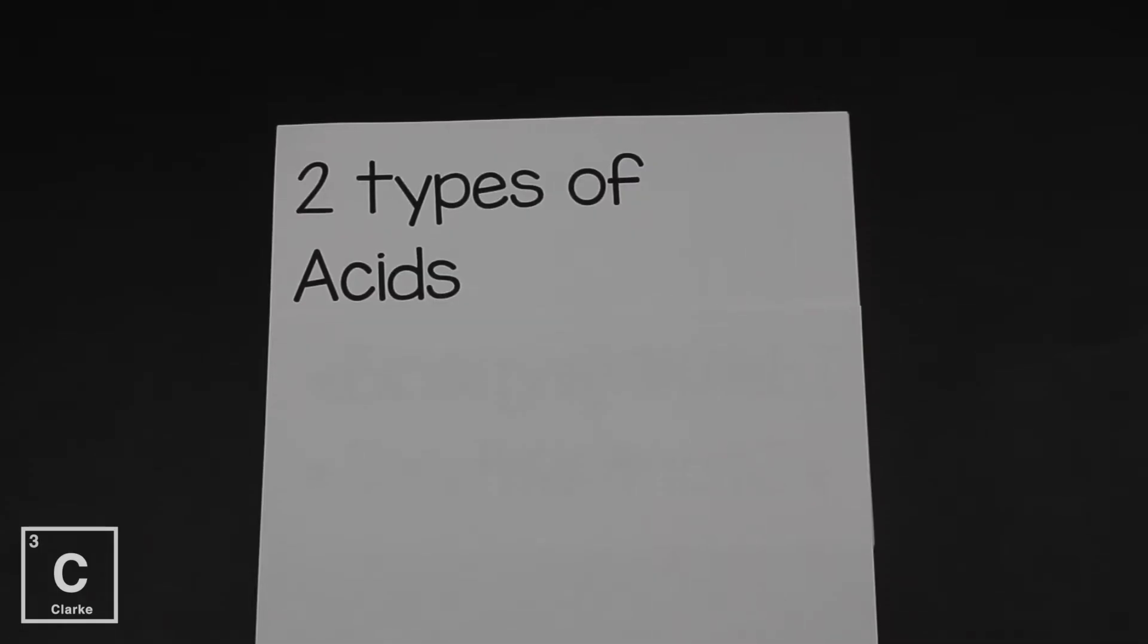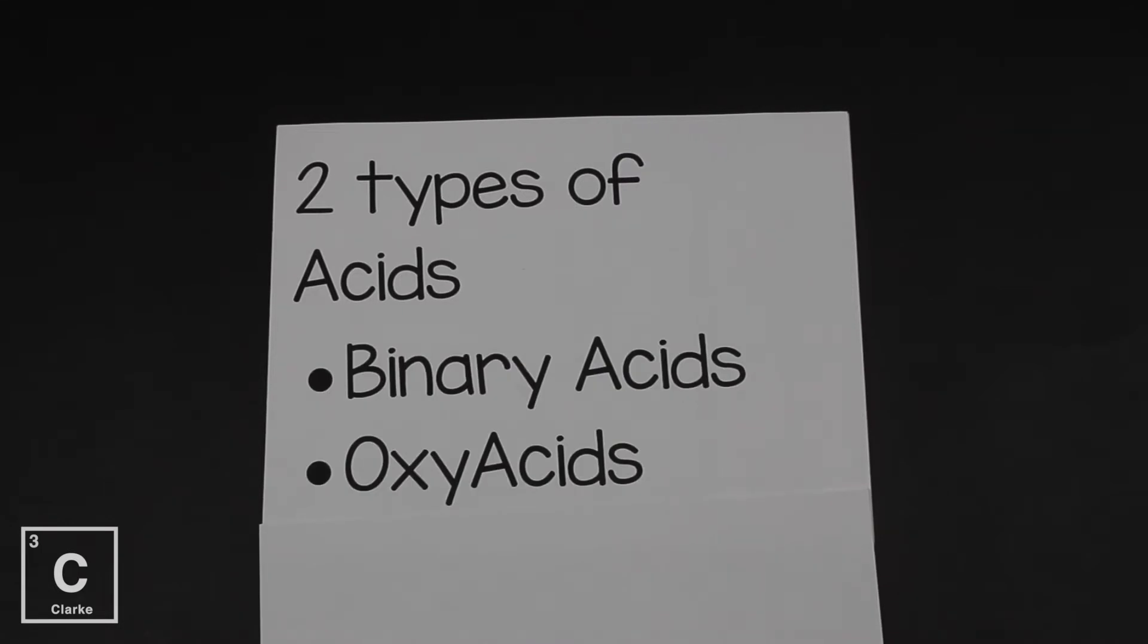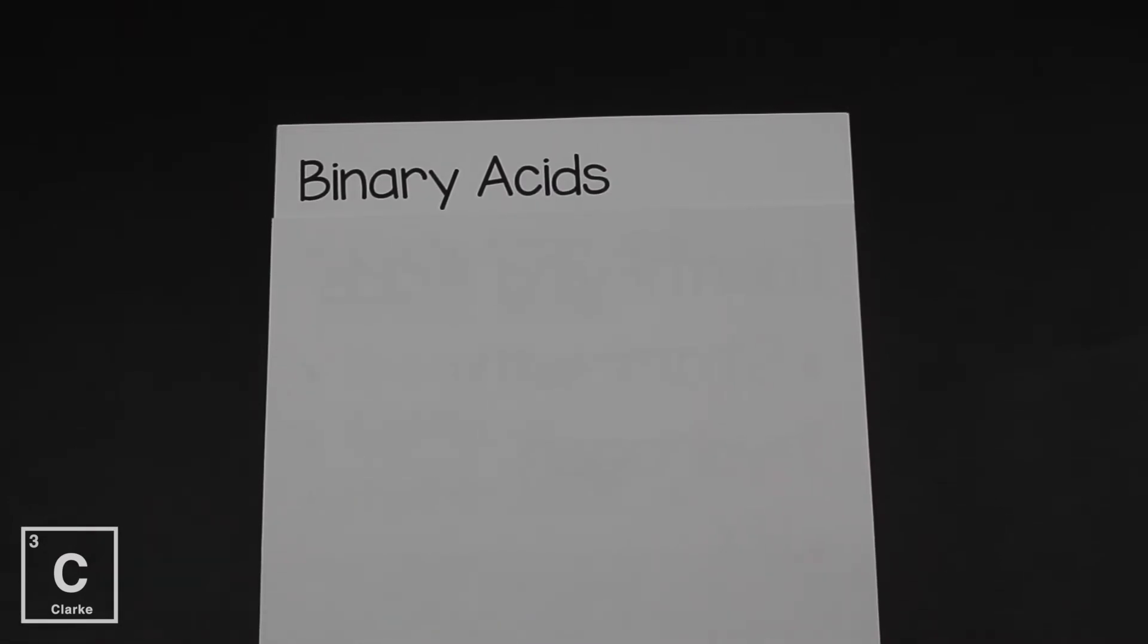But first we need to talk about the two types of acids. The first type of acid is called binary acids. But we also have oxy acids. You can probably guess from the word oxy acid that these acids have oxygen in them. Because remember acids start with H. And even though hydrogen is a non-metal, it sometimes acts like a metal. Hydrogen is over there in group one. And it does have a plus one charge because it gives up its electron. So hydrogen kind of acts like a metal. And so the other part of the acid is going to be the non-metal. And when that non-metal comes from the periodic table, it's called the binary acid.